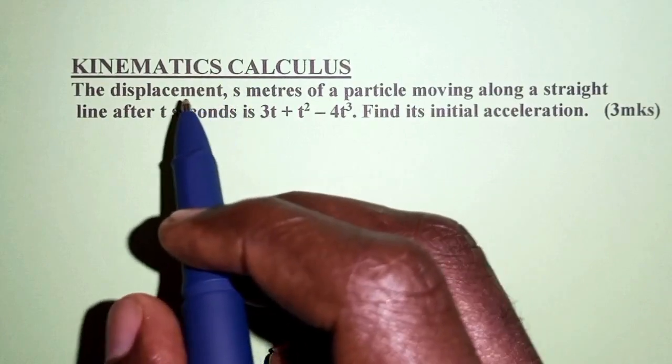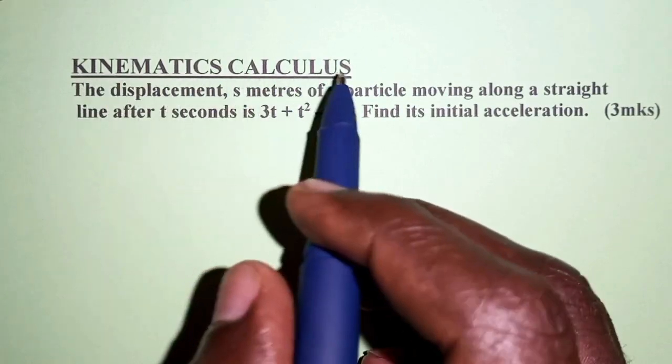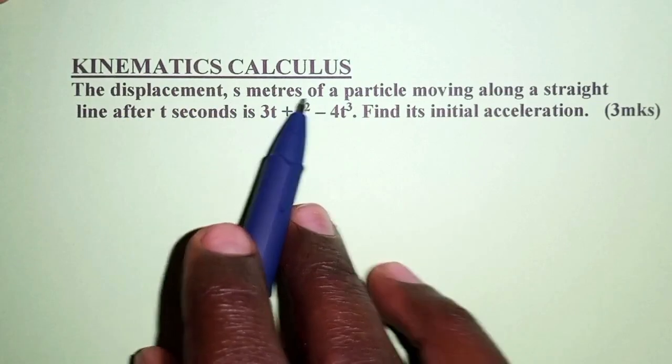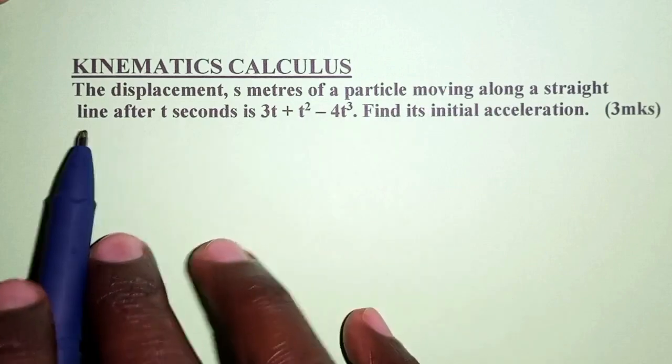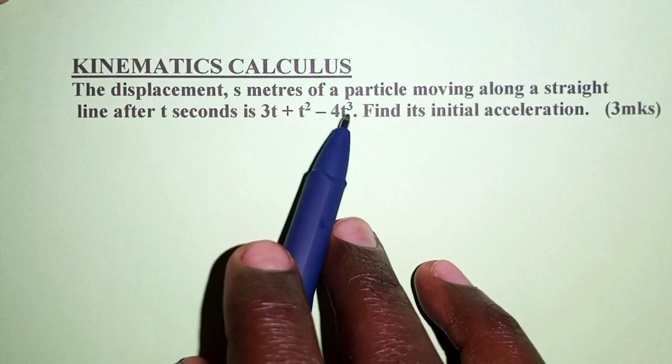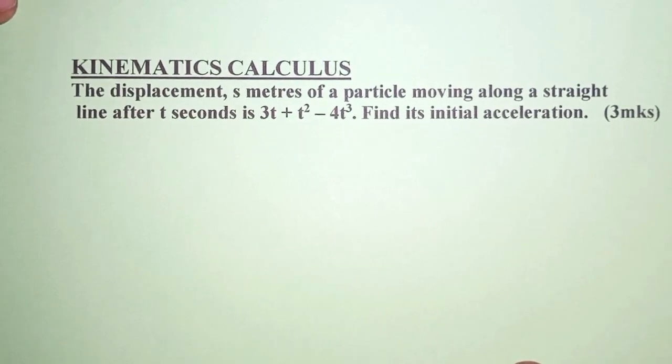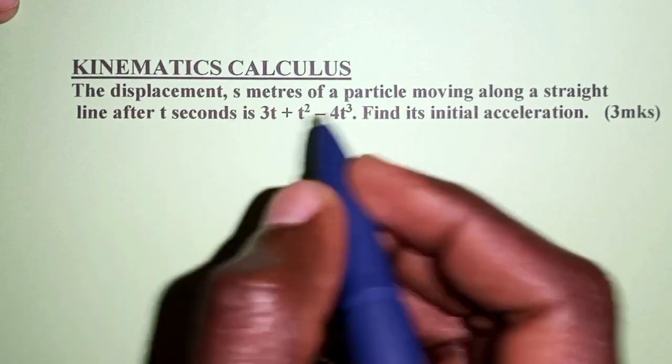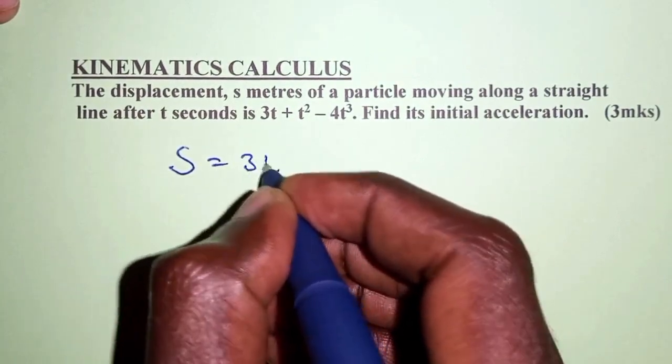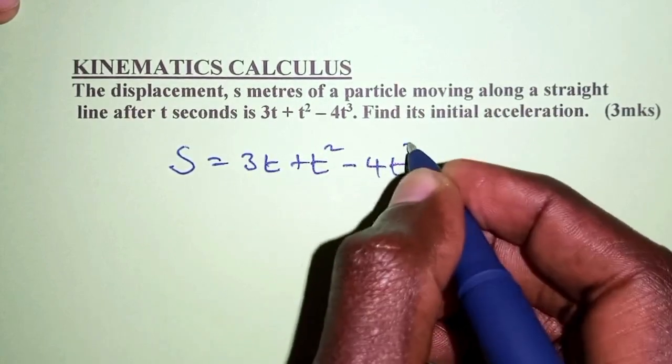Hello everyone, welcome to this presentation. Today's question is about kinematics calculus. The question reads: the displacement s meters of a particle moving along a straight line after t seconds is 3t + t² - 4t³. Find its initial acceleration. So we are told that the displacement s = 3t + t² - 4t³.